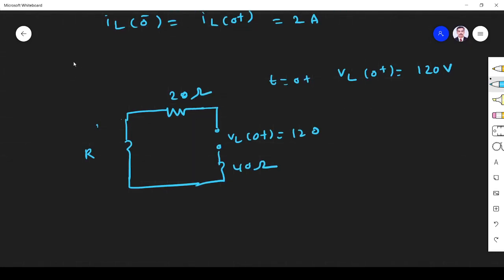So now I apply KVL. What will happen? So 120 is equal to... What is the current flowing through the circuit? At IL(0+), T is equal to 0 plus, current flowing through the circuit is 2 amps. So I into R is 20 plus 40 plus R. This implies R is equal to 0 ohm.